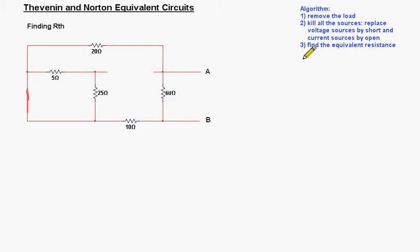The last step, the third step here, is to find the equivalent resistance between points A and B. So we are looking for the resistance seen from this point here. This is going to be our Thevenin resistance.